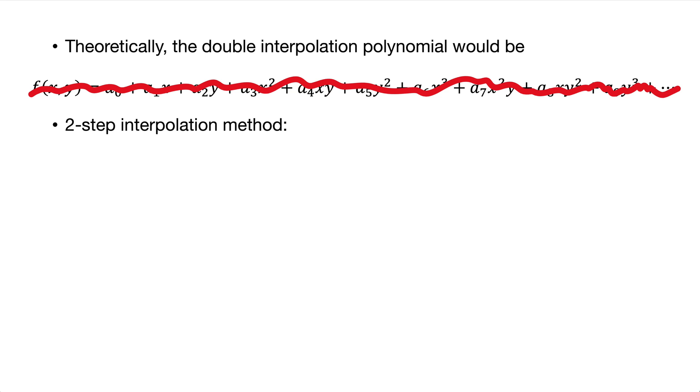The idea of the two-step interpolation is to perform one-dimensional interpolation in the first step over the columns, and then the second step over the rows.